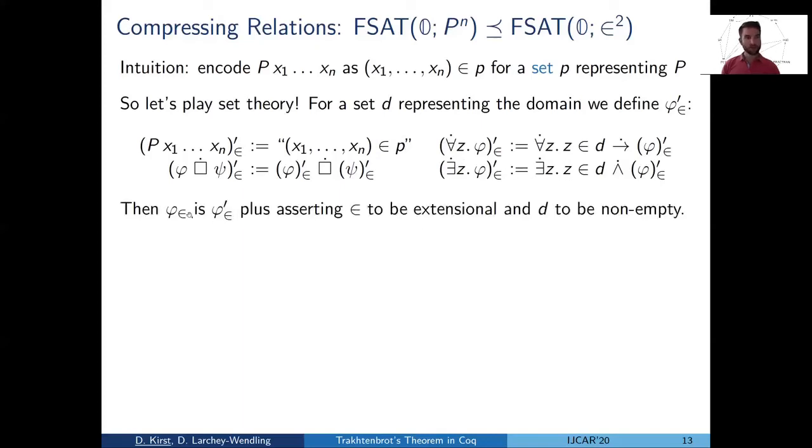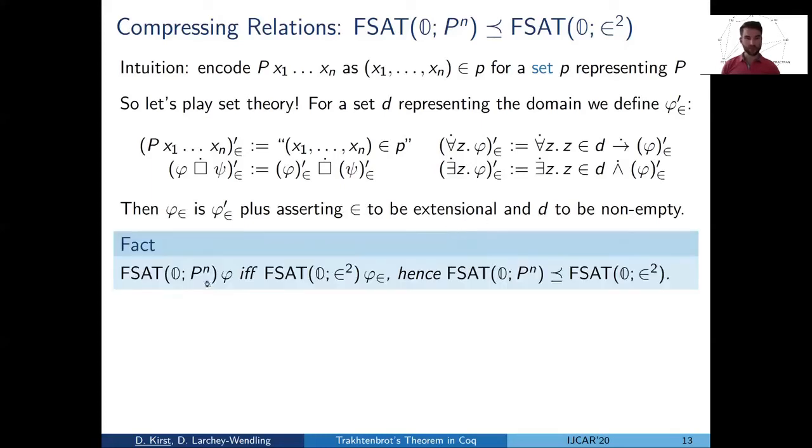And then we add to this translation a bit of structural requirements that membership is extensional and that the domain is not empty. And then we verify that the reduction holds. So that in the original signature, phi is satisfied if and only in the binary signature, the translation is satisfied.